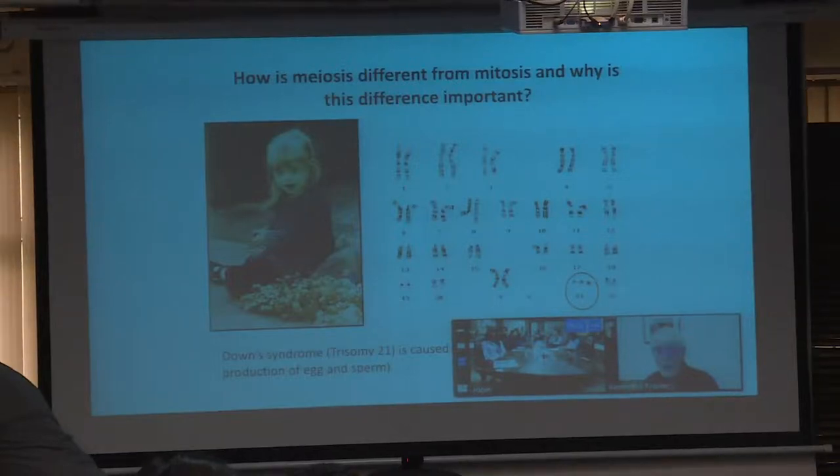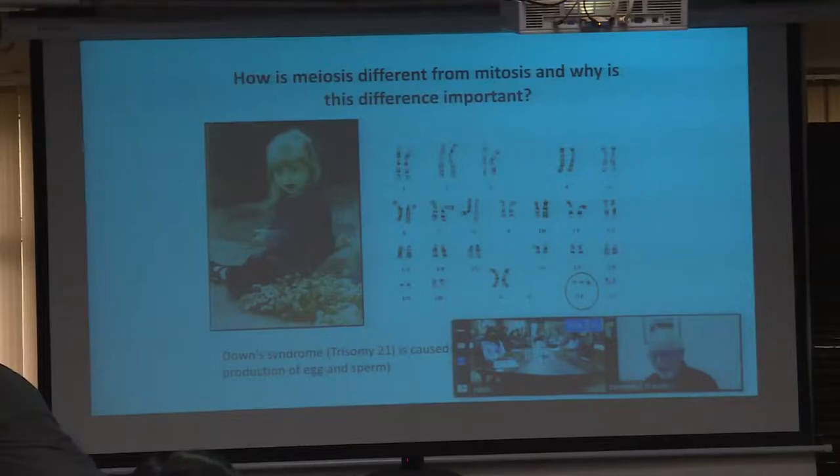After studying Down syndrome for many years — and notably Ravinder has spent some time studying chromosome 21 and Down syndrome — after meiosis you form gametes, and gametes do not have homologous chromosomes anymore. It's important to understand meiosis because it's the basis of all genetics.